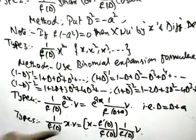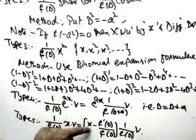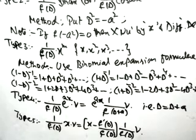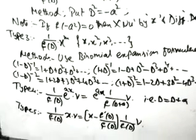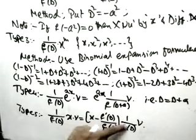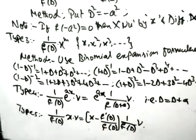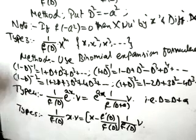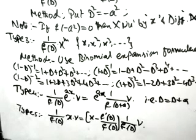Type 5 is (1/f(D))·x·V. The formula used is: x·(1/f(D))·V − (f'(D)/f(D))·(1/f(D))·V. These are the five types already covered in the last part. In some longer questions, two or three types may appear in one question combined.